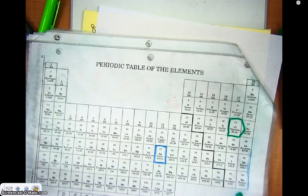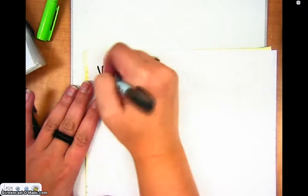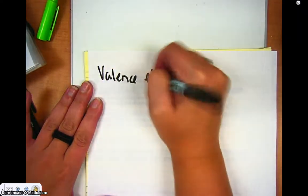noble gas configuration, all of the electrons that make up the atom of an element. Now, what we're going to do with Lewis dot structures is we are only going to represent what are called the valence electrons. Let me just write that term down for you. It's valence electrons.